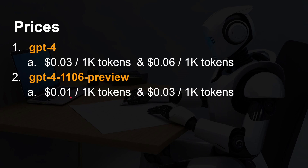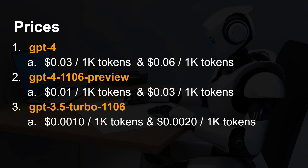The GPT-4 Turbo model — currently GPT-4 1106 Preview — is much cheaper: only 1 cent for 1,000 input tokens and 3 cents for 1,000 output tokens, roughly half the price. And when you get to GPT-3.5 Turbo 1106, it's really, really cheap — 0.001 and 0.002 cents — so about 10 times cheaper than any of the others, making it a very interesting model for API calls.